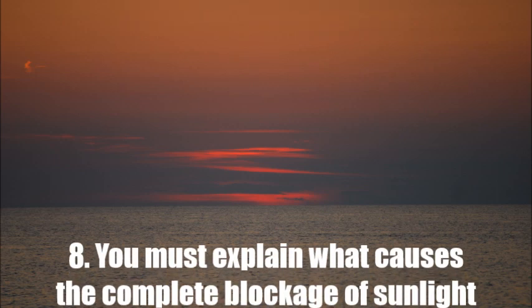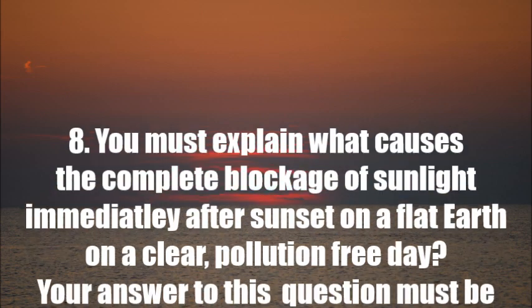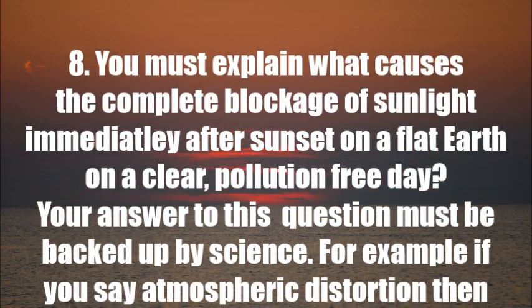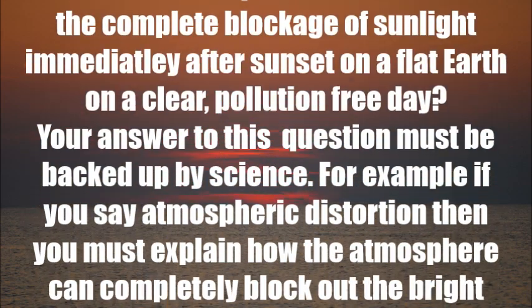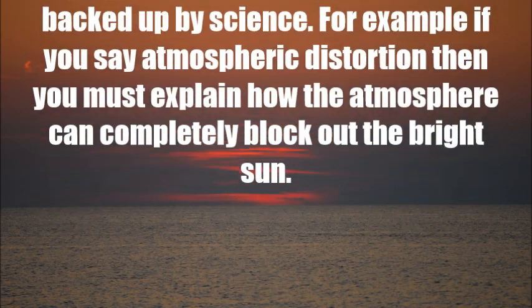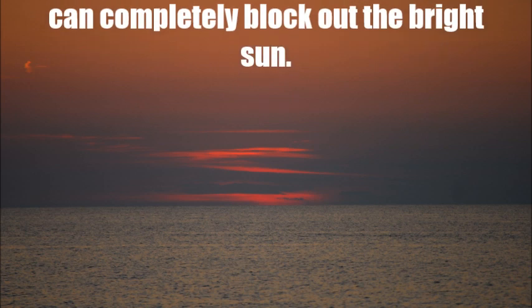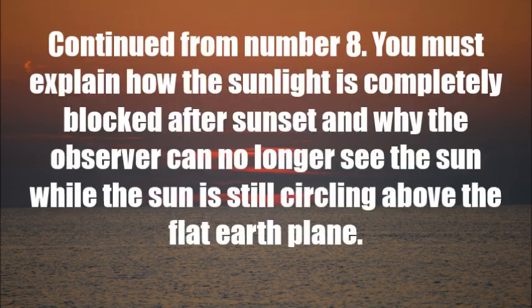Number eight: you must explain what causes the complete blockage of sunlight immediately after sunset on a flat earth on a clear, pollution-free day. Your answer must be backed up by science and experiments — for example, if you say atmospheric distortion, you must explain how the atmosphere can completely block out the bright Sun. You must also explain how sunlight is completely blocked after sunset and why the observer can no longer see the Sun while it is still circling above the flat earth plane.